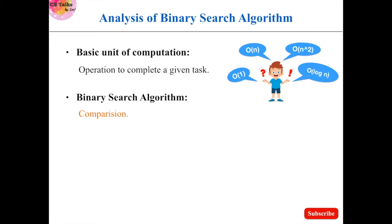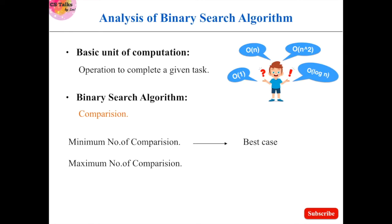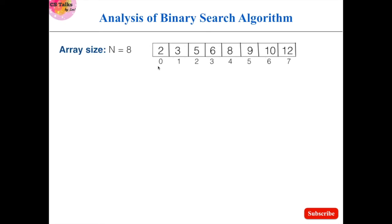Our goal is to find out how many times the algorithm performs comparison. If it performs a minimum number of comparisons, that is the best case. If it performs a maximum number of comparisons, that is the worst case. The time taken to perform a minimum number of comparisons is less than the time taken to perform a maximum number of comparisons, which is why we call them best case and worst case. Now I am going to take an array of size 8 with sorted elements.